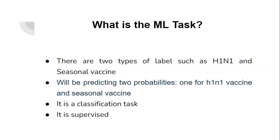What is the machine learning task for our dataset? We are going to be predicting two probabilities, one for H1N1 vaccine and one for seasonal vaccine. Our dataset is a classification problem, and so it's a supervised learning problem.